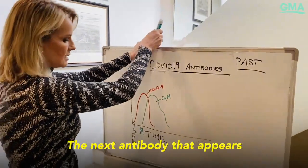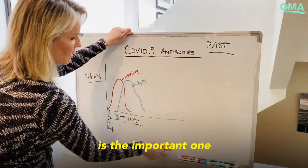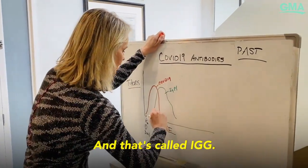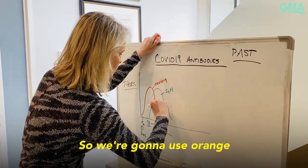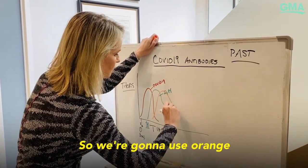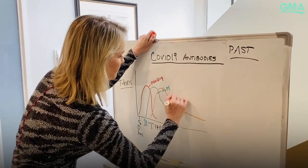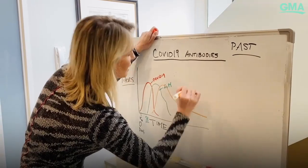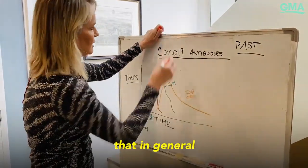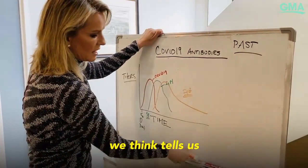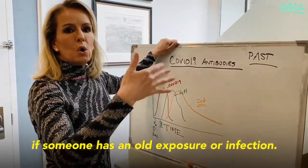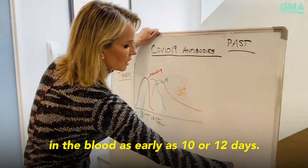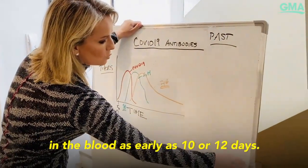The next antibody that appears is the important one that everyone is talking about with COVID-19, and that's called IgG. We're going to use orange for IgG. That's the antibody that, in general, we think tells us if someone has had an old exposure or infection. We think that it can start to appear in the blood as early as 10 or 12 days.